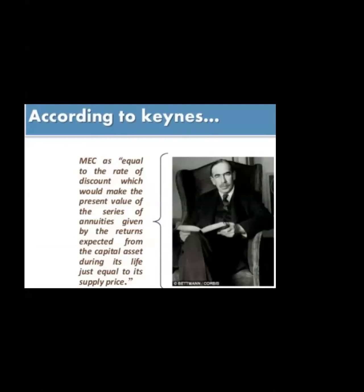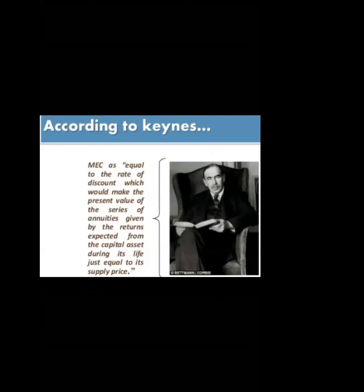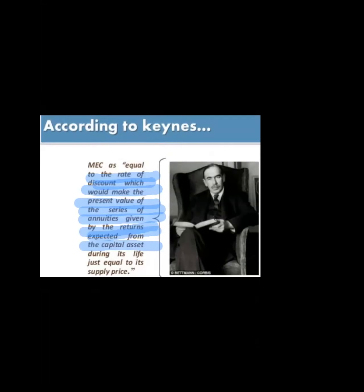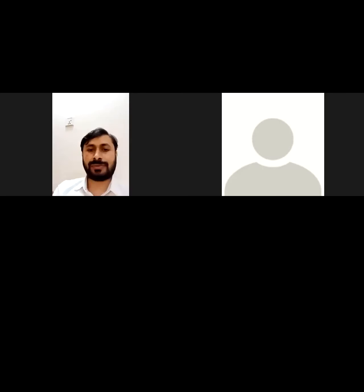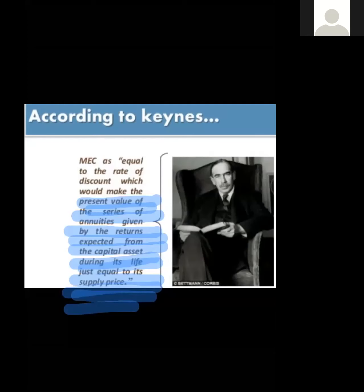According to Keynes, MEC is equal to the rate of discount which would make the present value of the series of annuities — given by the returns expected from the capital asset during its lifetime — just equal to the supply price. If the return over the lifetime of annuities equals the supply price, Keynes has recognized this as the marginal efficiency of capital.